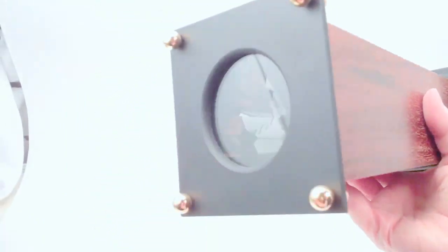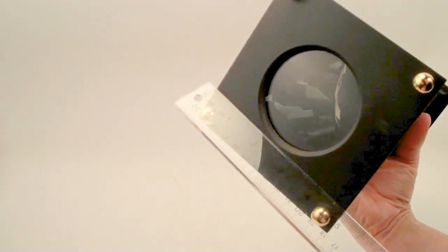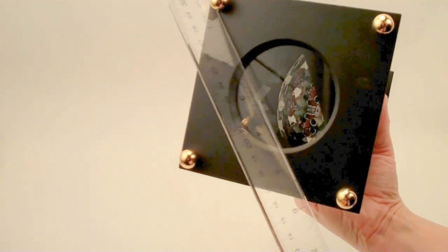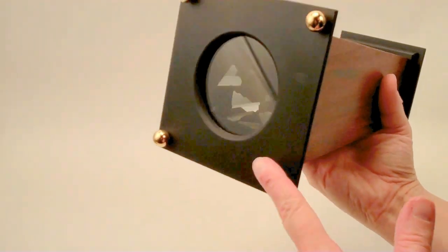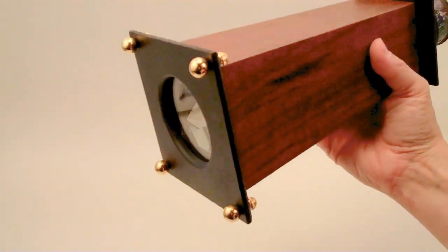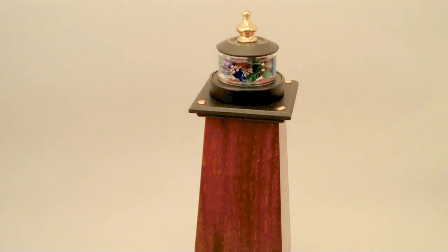Now the base portion here has a width of four and seven-eighths of an inch and a diagonal width of six and three-quarter inches. The four brass feet protect the glass eyepiece from any scratches or damage as it rests on your table.